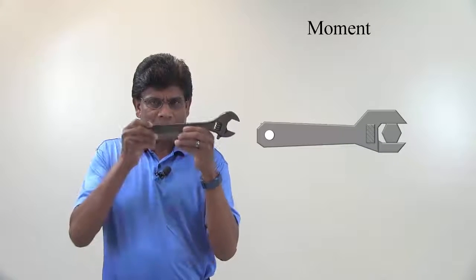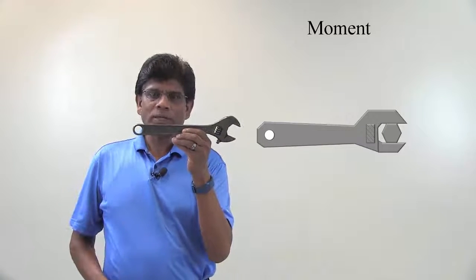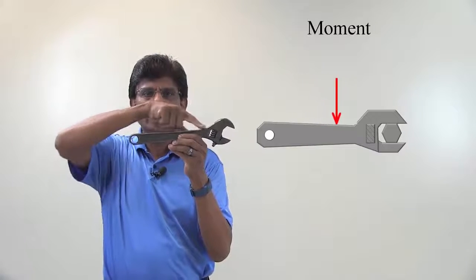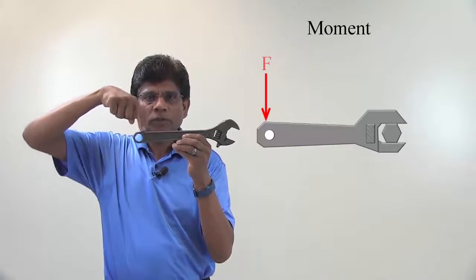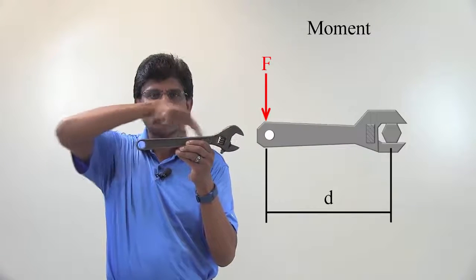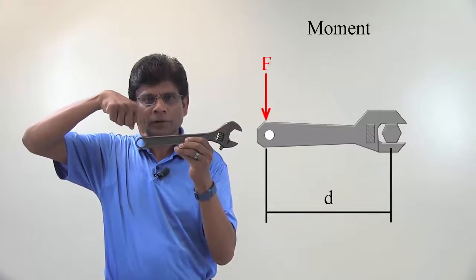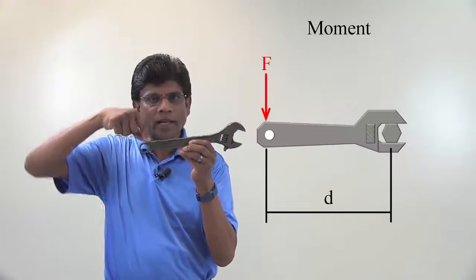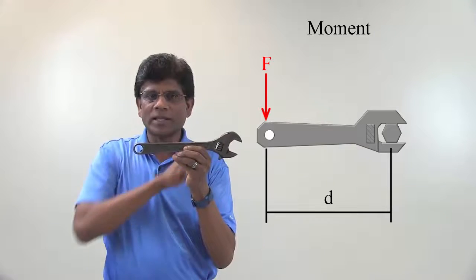Let me hold the wrench like this. If I want to use it, I have to apply a force somewhere here on the handle. This force is a push applied at a distance from the center of rotation. This push creates what I call the tendency of the force to rotate the body about an axis that passes through the center.